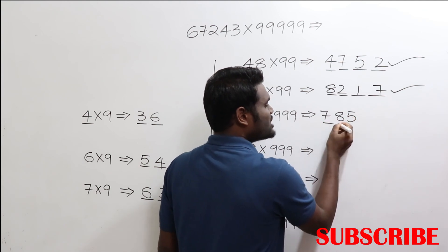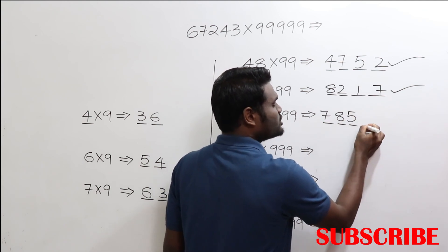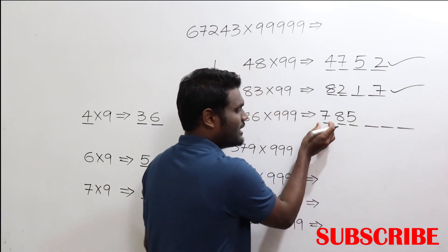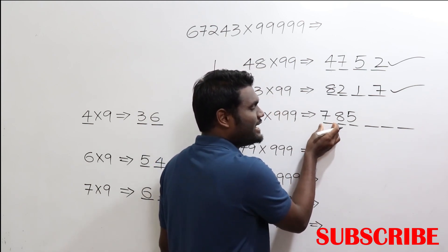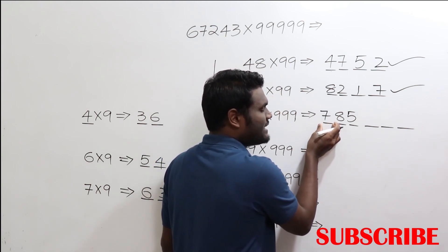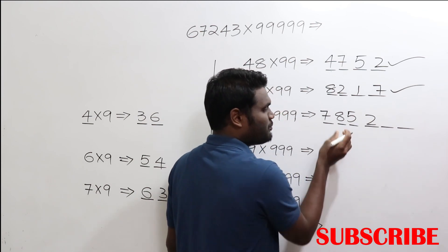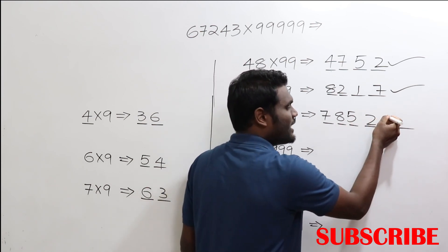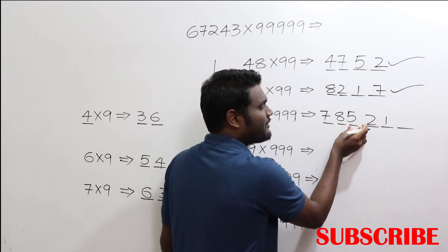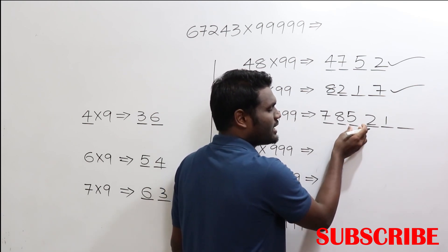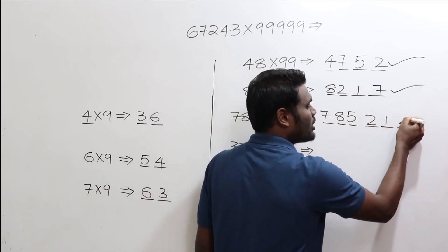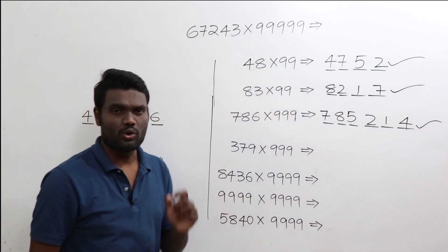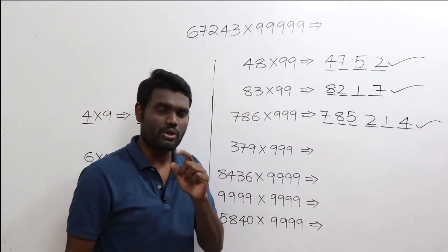Next, 786 times 999. Do one less: 786 minus 1 is 785. As you have three digits, your answer should have three more digits. For 7, add 2 to get 9. For 8, add 1 to get 9. For 5, add 4 to get 9. So the answer is 785214.